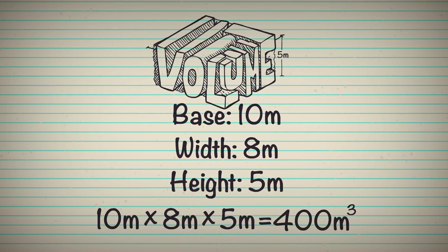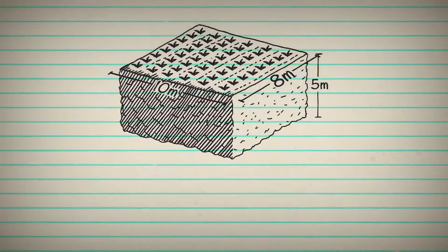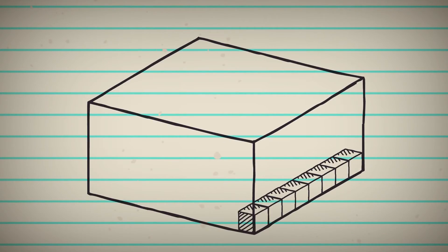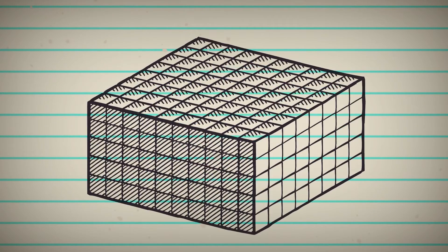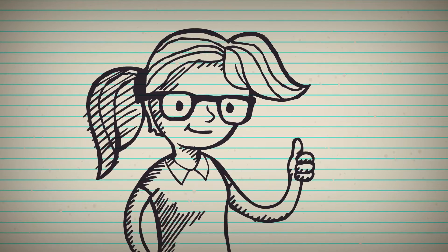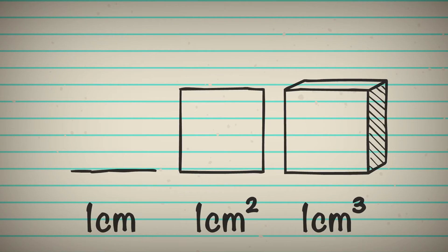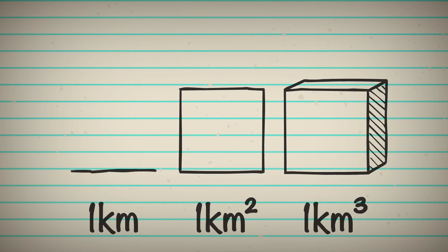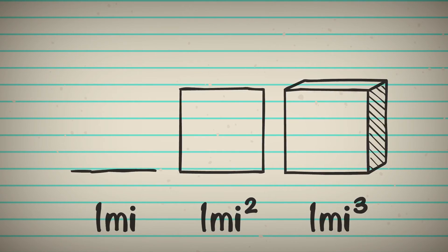There we have it, 400 meters cubed. We use cubed instead of squared, since cubed units are used to measure the volume of three-dimensional objects. And that is how we measure things in the three-dimensional world. This simple concept can be applied to many different forms of measurement, both metric and standard.